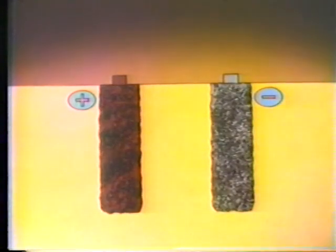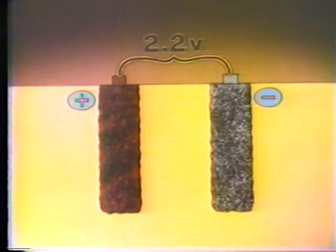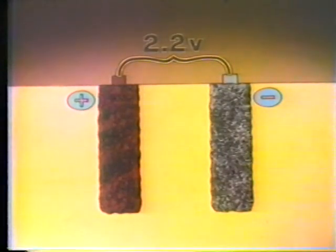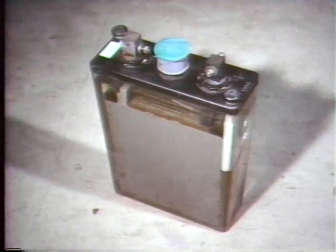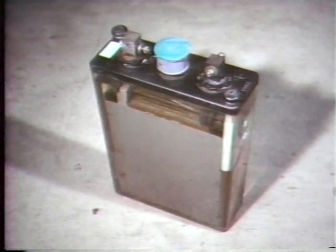Any lead-acid cell, regardless of its size, has a voltage of slightly over 2 volts when fully charged. For example, this cell has a voltage of 2.2 volts. But the size of a cell — or to be more precise, the surface area of its plates — does affect the cell's capacity, measured in ampere-hours.